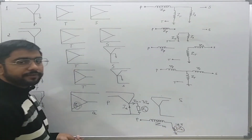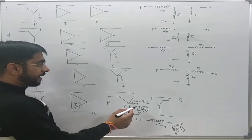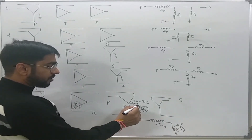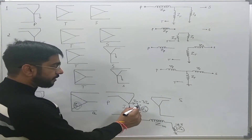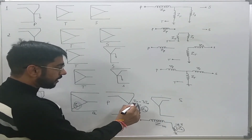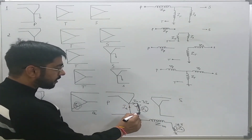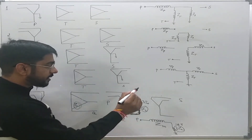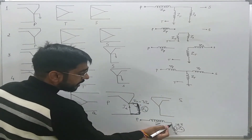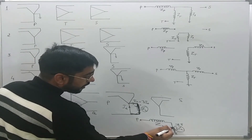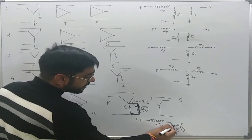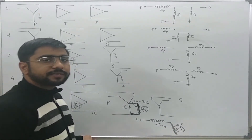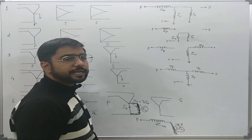A little modification should be made to the previous lecture to also account for Zl. If there is no Zl and only a line-to-neutral fault is present, then the equivalent network will have three times Zl equal to zero, which reduces it to the previous case we studied in the earlier lecture.